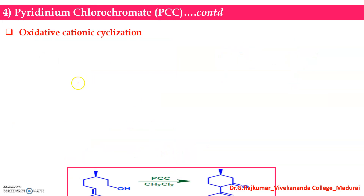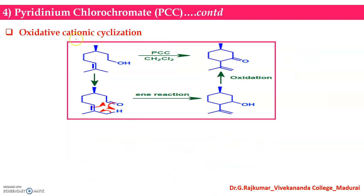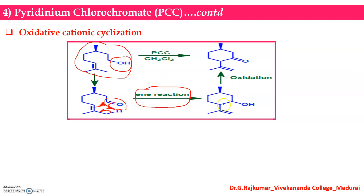In oxidative ketone cyclization, the first step oxidizes a primary hydroxy group into an aldehyde, and there is the possibility of an ene-type reaction to get the cyclized product. A secondary hydroxyl group can be further oxidized into a ketone, giving the possibility of oxidative cationic cyclization.